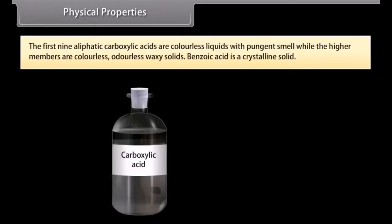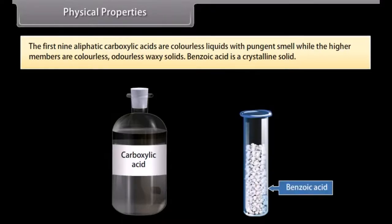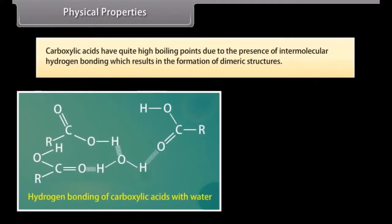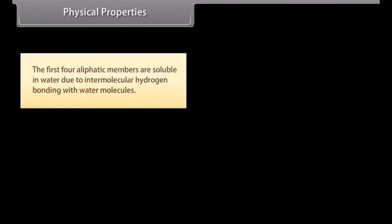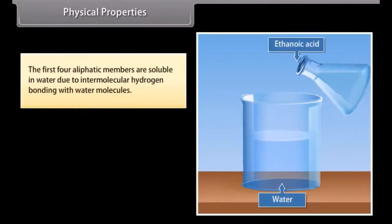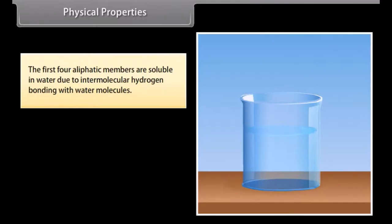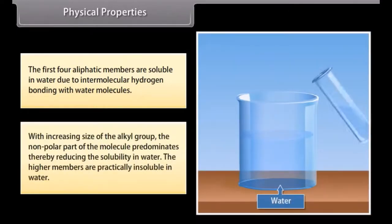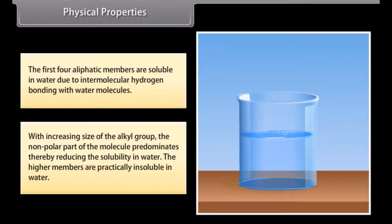Physical properties: The first nine aliphatic carboxylic acids are colorless liquids with pungent smell, while the higher members are colorless, odorless waxy solids. Benzoic acid is a crystalline solid. Carboxylic acids have quite high boiling points due to the presence of intermolecular hydrogen bonding, which results in the formation of dimeric structures. The first four aliphatic members are soluble in water due to intermolecular hydrogen bonding with water molecules. With increasing size of the alkyl group, the non-polar part of the molecule predominates, thereby reducing the solubility in water, and the higher members are practically insoluble in water.